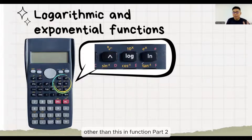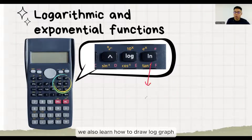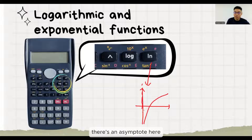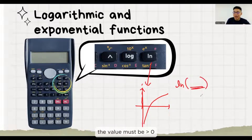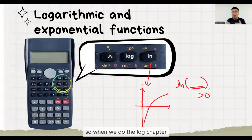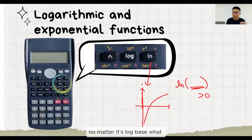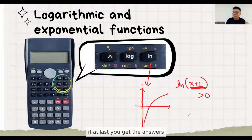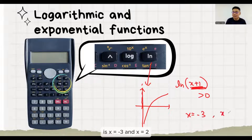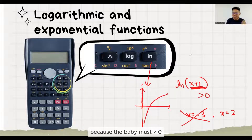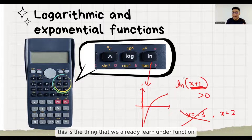Other than this, in function part two, we also learned how to draw a log graph. There are asymptotes here, which means that the log graph's value must be more than zero. So when we do the log chapter, we always need to remember, no matter what the base is, the baby part — the value must be more than zero. If at last you get the answer is x equals minus 3 and x equals 2, you must reject minus 3 because the baby must be more than zero. This is the thing we already learned under function.